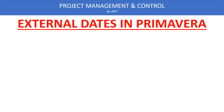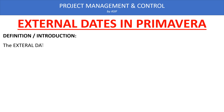First we will see what is the definition of external dates. These external dates are a sort of constraint, and like any other constraint, they may affect our future updates and updated program, and they may cause some results which are unexpected for us.